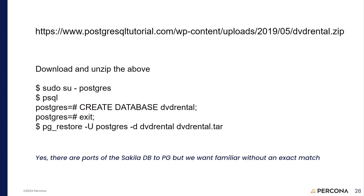Download that dvdrental.zip, unzip it, then sudo to superuser as the user postgres and run psql, which is the main command line client for Postgres. Notice you have an equal sign before the octothorpe — that tells you you've got privileges. Create the database: CREATE DATABASE dvdrental. Then exit psql and run pg_restore with -U for the user — the user's name is postgres — and -d for the database name dvdrental.